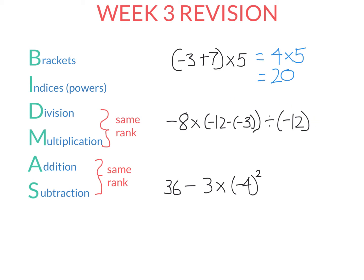Let's look at this second one. We perform what occurs in the brackets first. In these first brackets, we have two negative signs and a subtraction sign. Note that if you have two negatives next to each other, they become a positive. So my next line of working: I leave the negative 8 by itself. Negative 12 plus 3 is negative 9, and then we divide by negative 12. Since we have multiplication and division, we perform whichever occurs first from left to right — so next I do negative 8 times negative 9.